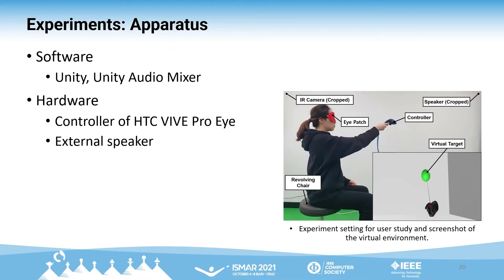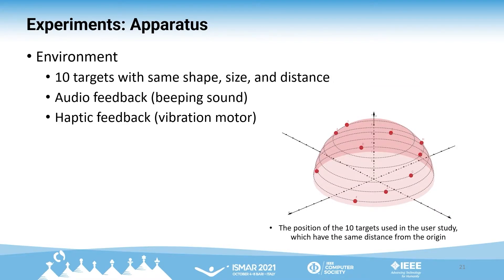For the experiments, we built a virtual reality environment using Unity running on a desktop computer. A handheld controller of HTC Vive Pro and an external speaker were used to convey output feedback. For the target finding task, 10 sphere targets were used, all at the same distance from the participants. We played a beeping sound for audio feedback where its interval decreased as the pointer got closer to the target region or exact target position. We also turned on a vibration motor for haptic feedback when the pointer was in the blue region. When the laser pointer entered the exact target position, participants received short vibration feedback with doubled intensity along with a chime sound for confirmation.